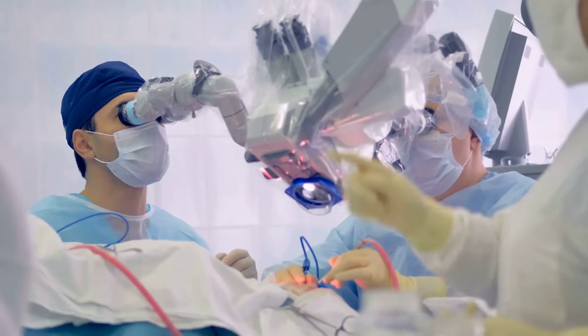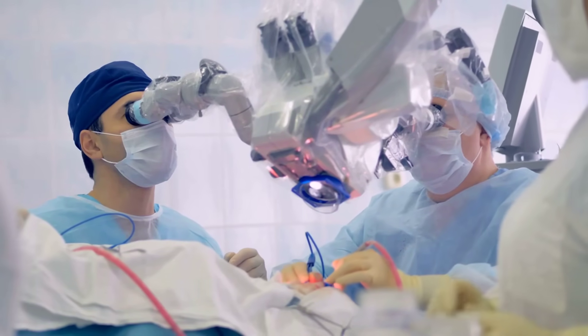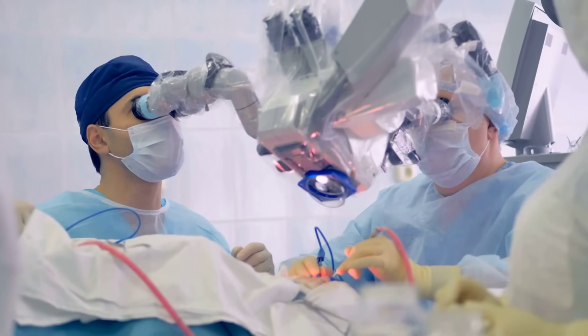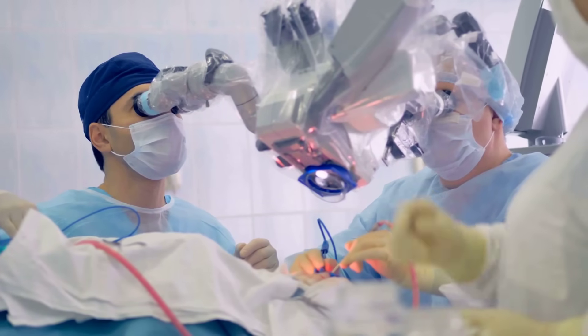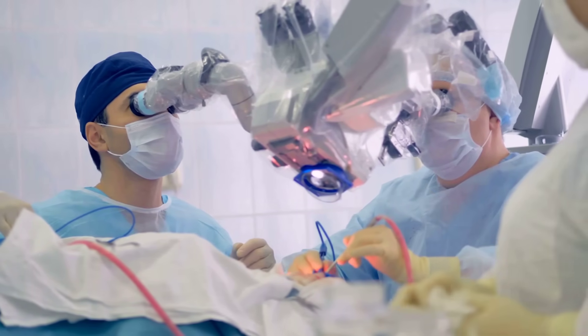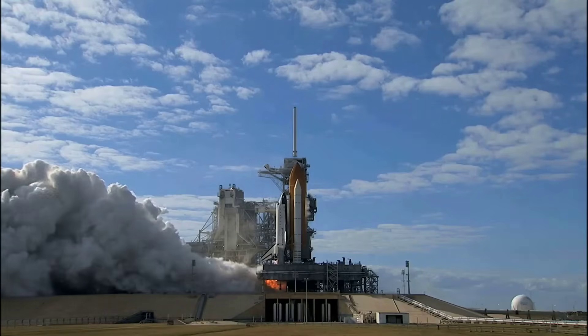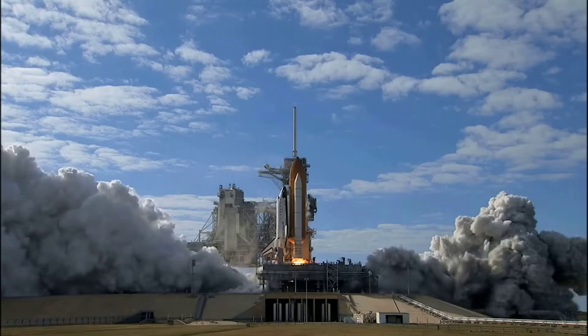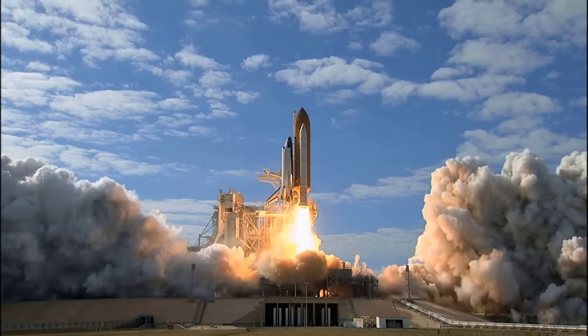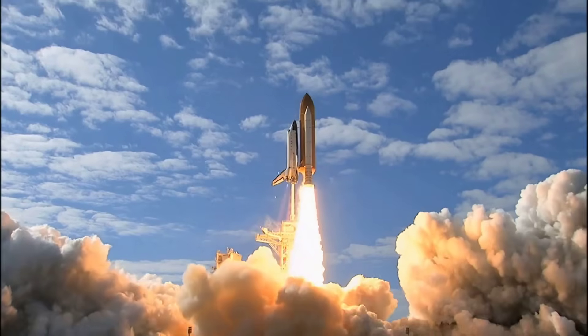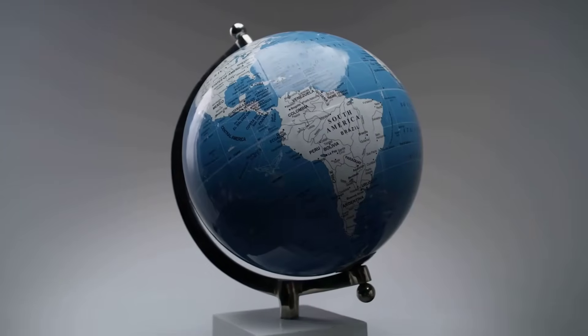Implication number three. Medical devices. Imagine a pacemaker with AI that learns your heart patterns. Or a prosthetic limb with analogue AI that responds as naturally as a real limb. These need to run for years on tiny batteries. Implication number four. Space exploration. Analogy AI could enable sophisticated AI in space probes and rovers without massive power supplies. We're talking about smart emissions to Mars, the outer planets, beyond.